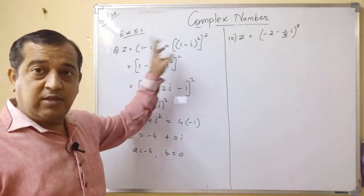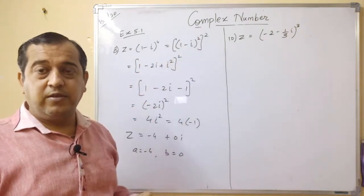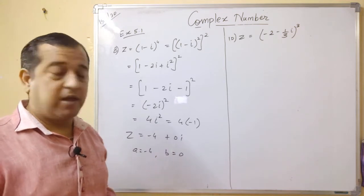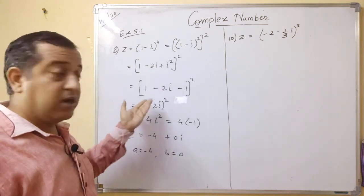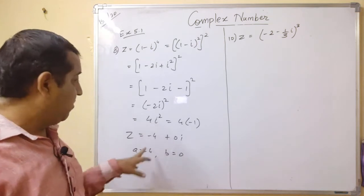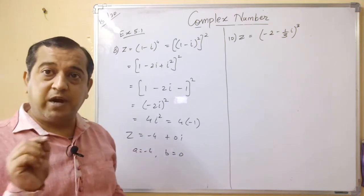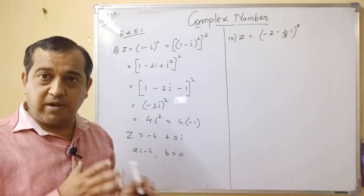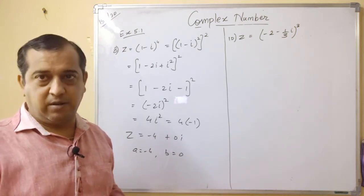So you can write 1-i raise to 4, as 1-i square ka square, then we apply a-b bracket square identity, and then we square it. You can see that the imaginary part is zero. Such numbers are called purely real numbers. This complex number is called purely real number.